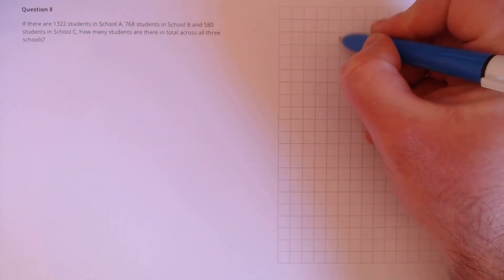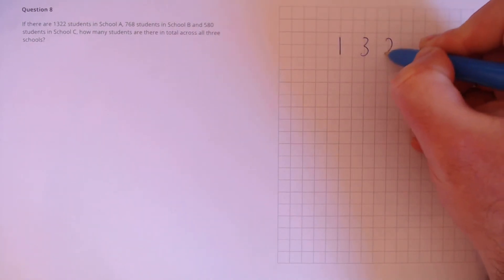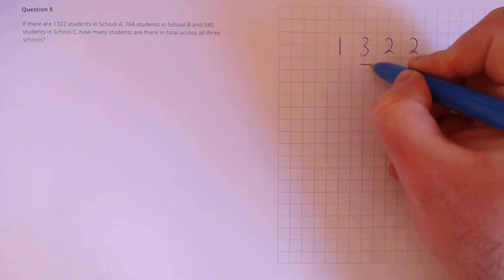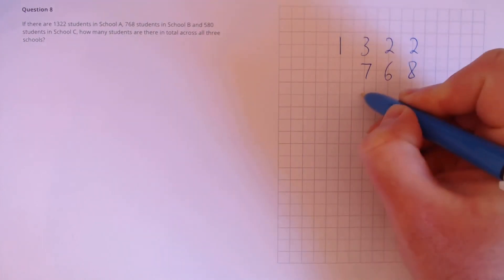Question 8. If there are 1,322 students in School A, 768 students in School B, and 580 students in School C, how many students are there in total across all three schools. Let's set up the column addition. So, we've got 1,322, plus 768, plus 580.